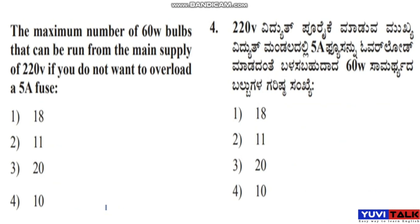Next question: What is the maximum number of 60-watt bulbs that can be run from a main supply of 220 volts if you do not want to overload a five-ampere fuse? Option 1 is 18, Option 2 is 11, Option 3 is 20, Option 4 is 10. Option 1, which is 18, is the right answer.